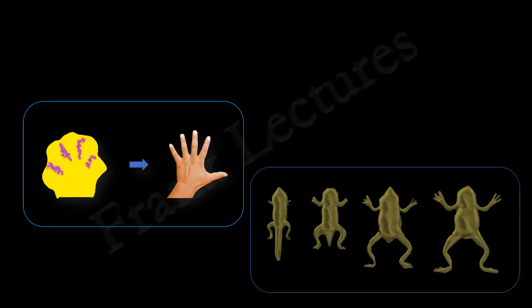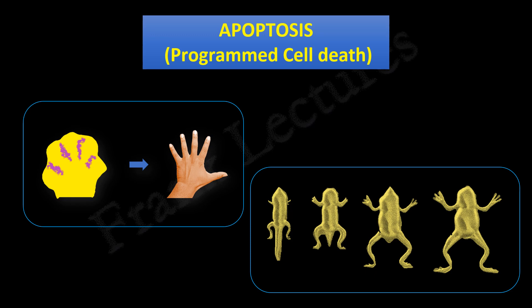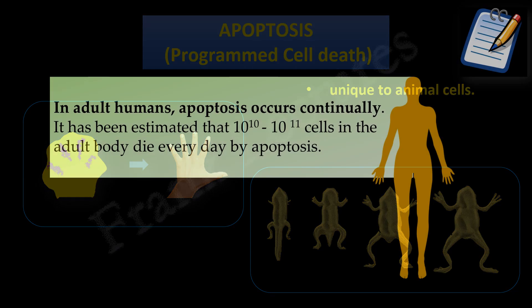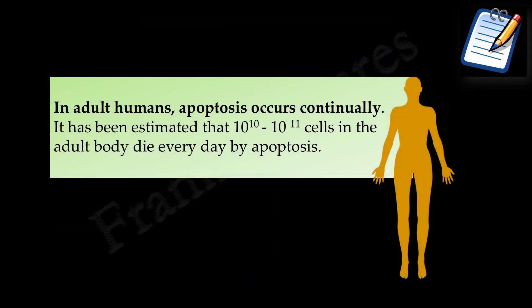The cell death in all these examples we are talking about is known as apoptosis. Apoptosis is also known as programmed cell death. It is unique to animals. In adult humans, apoptosis occurs continually. It has been estimated that 10 to the power 10 to 10 to the power 11 cells in the adult body die every day by apoptosis.